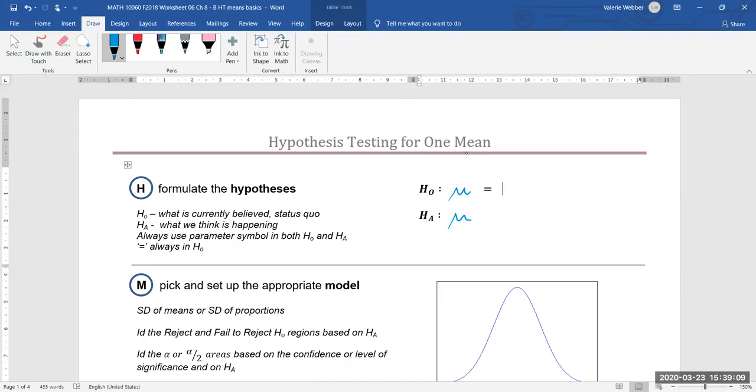So in our null what we currently believe will have some kind of number that we believe it's equal to and the alternative we're going to think it's either greater than that number or maybe less than that number or possibly not equal to that number.